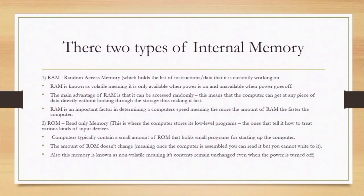For example, if I have three tabs open, I can access any of them randomly — that is what makes it fast. RAM is an important factor in determining a computer's speed, meaning the more RAM you have, the faster the computer. For example, if I have 2 GB and someone else has 8 GB, that person with 8 GB can access many things at the same time unlike me with 2 GB.